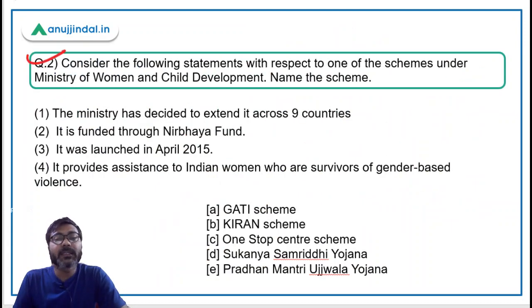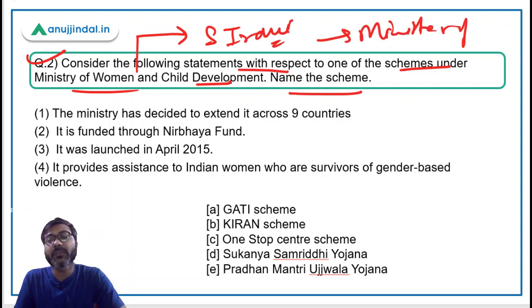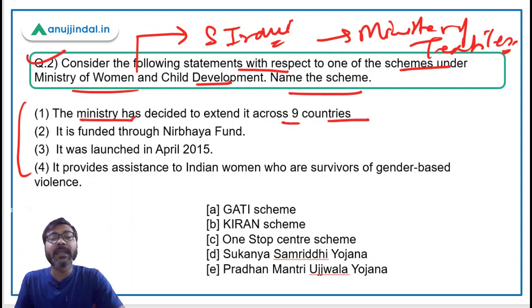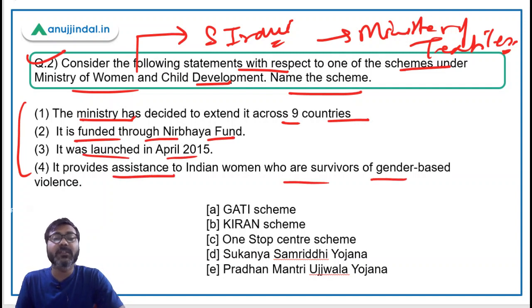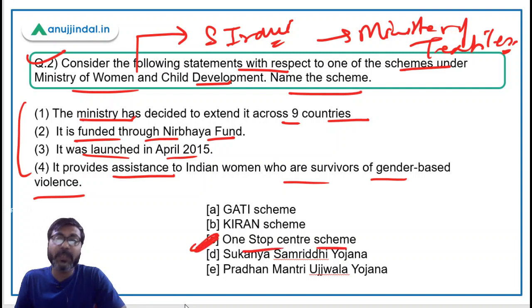Question number two: Consider the following statements with respect to one of the schemes under the Ministry of Women and Child Development, headed by Smriti Irani who is also the Minister of Textiles. You have to identify the scheme. The statements are: the ministry has decided to extend it across nine countries; it is funded through the Nirbhaya Fund; it was launched in April 2015; and it provides assistance to Indian women who are survivors of gender-based violence. The correct answer is option C — One Stop Center Scheme.